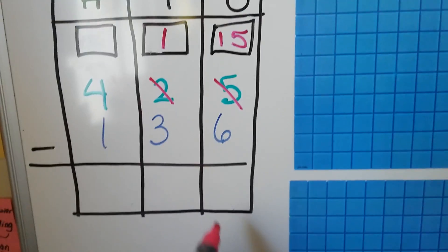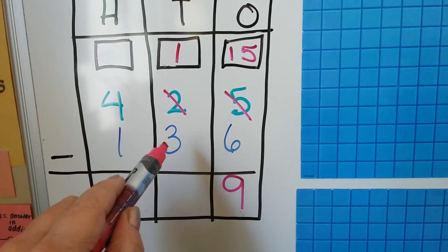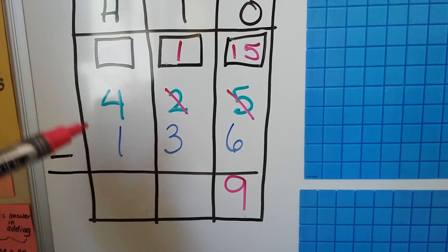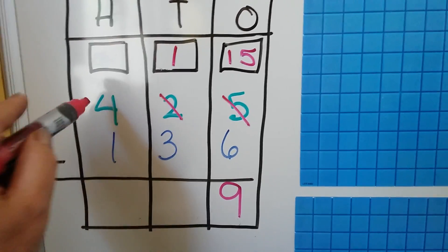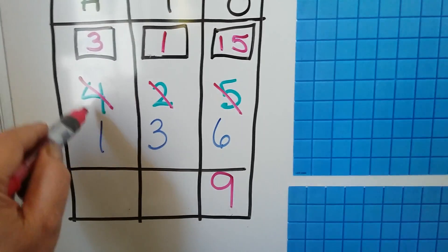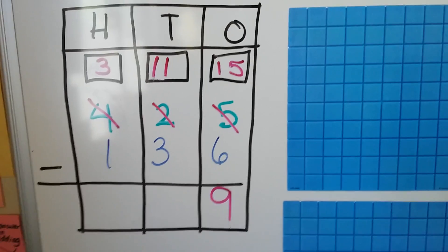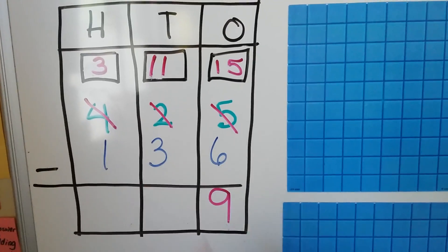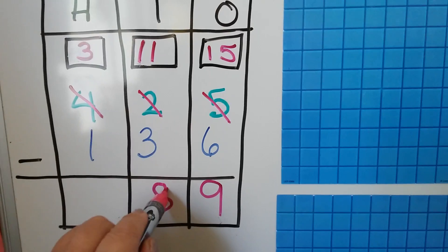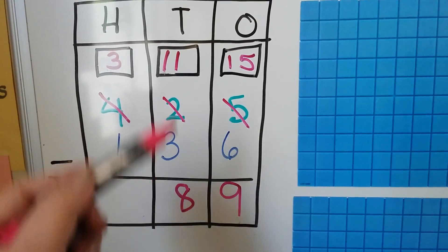15 take away six is nine. Now we have one ten and we need to take three away, but we can't do that. So we regroup this to be a three and give it to the tens place. Now we have 11 tens and we need to take three away. That's an 8. 8 plus 3 is 11 — we can do the opposite. We can do addition to check our subtraction.